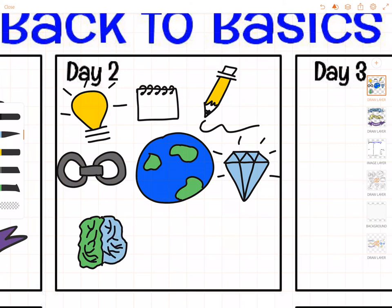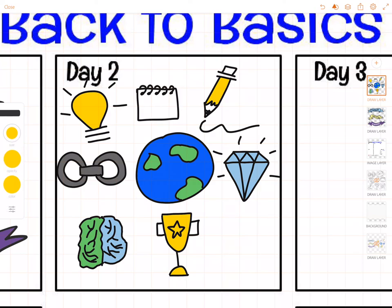And then my last icon that I like to use a lot is a trophy. I start with a U and then a line at the top, then I just do handles on the side and a line down. Then I make the base of the trophy and fill it in. If I wanted to, I can add a star right here. So there you go. Those are my top eight go-to basic icons. Thanks for watching.